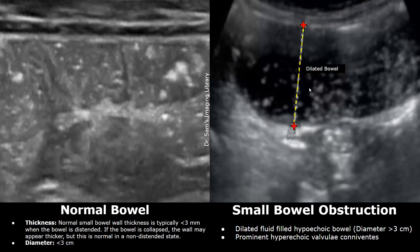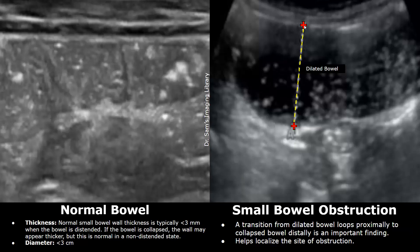Dilated hypoechoic fluid-filled bowels are somewhat easier to scan than normal bowel because they are dilated and filled with fluid. Because of the fluid content, it is easier to see small bowel obstruction on ultrasound. You may also find a transition zone — collapsed bowel can be seen distal to the obstruction. This transition from dilated bowel loops proximally to collapsed bowel distally is an important finding that helps localize the site of obstruction.